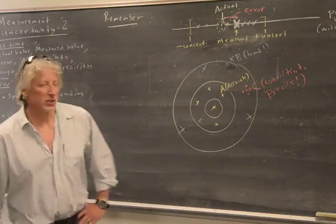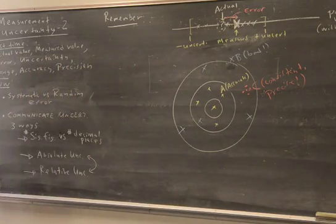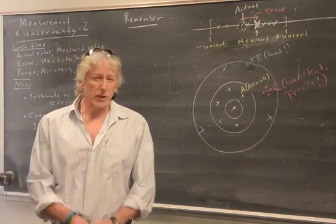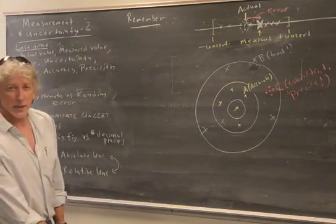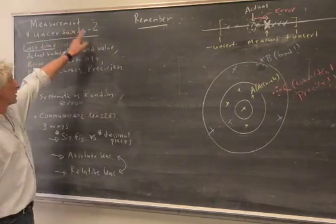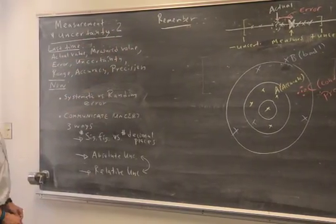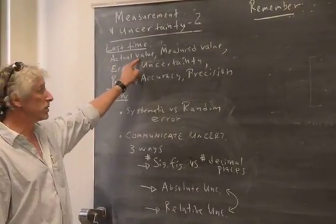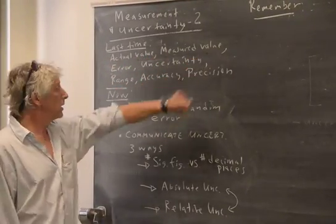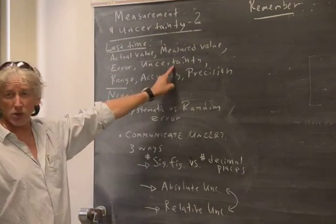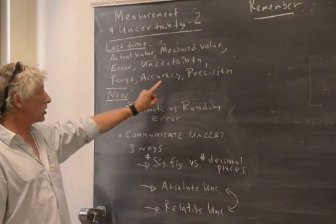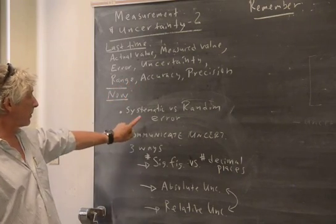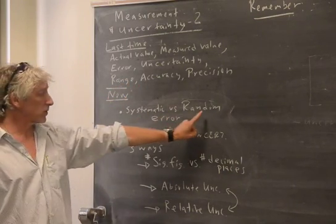All right, so let's continue our discussion of measurements and uncertainty, building up with a couple more preparatory ideas. This is measurement and uncertainty video 2. Last time we spoke about actual value versus measured value, error, uncertainty, range, accuracy, and precision. This time we'll talk about systematic versus random error.